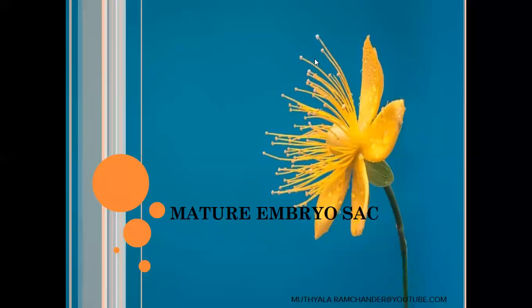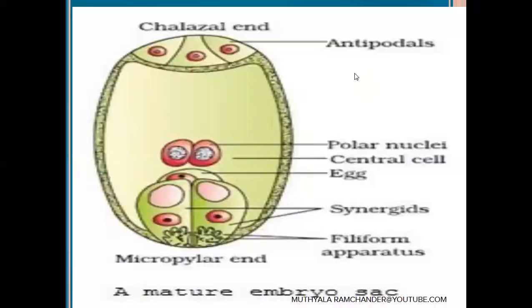Matured Embryo Sac Structure in Angiosperms. Generally, in all angiosperms, the embryo sacs belong to the polygonum type. The polygonum embryo sacs are present in more than 75% of angiosperms. Here we observe the matured polygonum embryo sac structure.